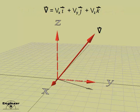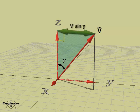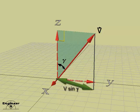Another way to define the direction of vector v is to use a projection onto the x-y plane, like a shadow. Since the z-axis is perpendicular to the x-y plane, the angle gamma is used to compute the length of vector v projected onto the x-y plane.